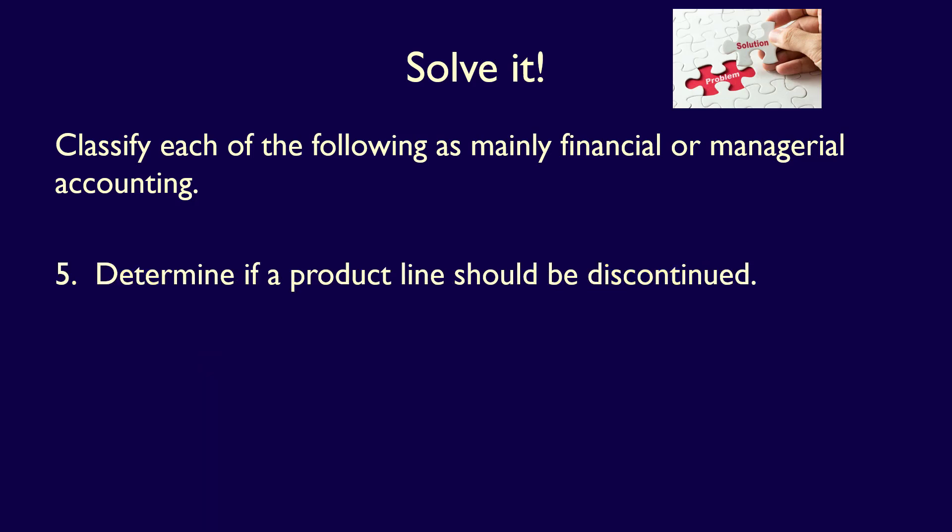Number five: Determine if a product line should be discontinued. We can see the words 'if' and 'should be,' and both focus on predicting the future. This is Managerial Accounting because it's focused on providing information to internal users so that they can make a decision about what to do in the future.